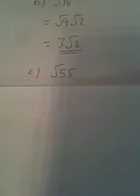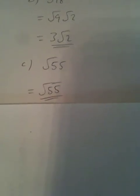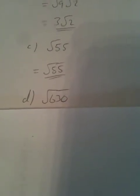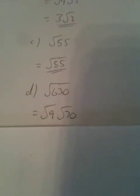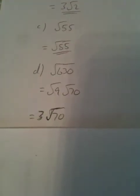Part B: square root of 18. Quick recap of square numbers — 9 goes into 18, so that's √9 × √2, which is 3√2. Part C: square root of 55. None of those numbers go into 55, so it just stays as √55. Part D: square root of 630. That's like 63 times 10, and 9 goes into 63, so it'll be √9 × √70, which is 3√70.